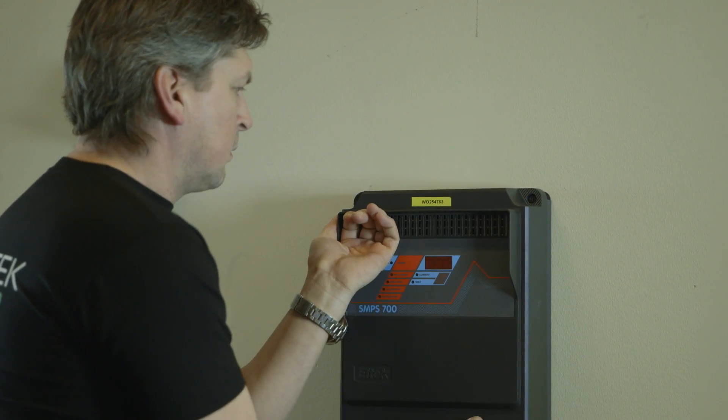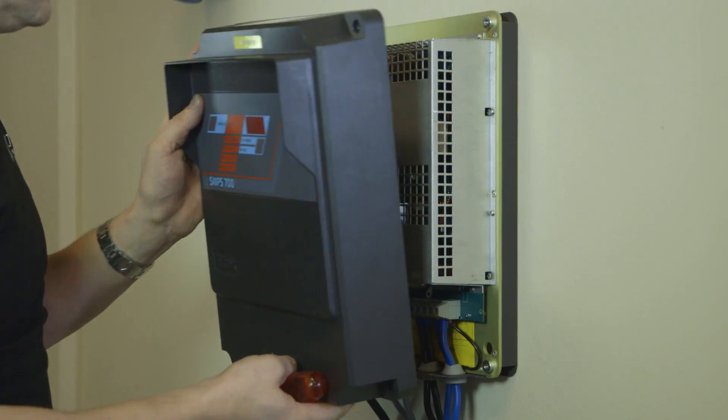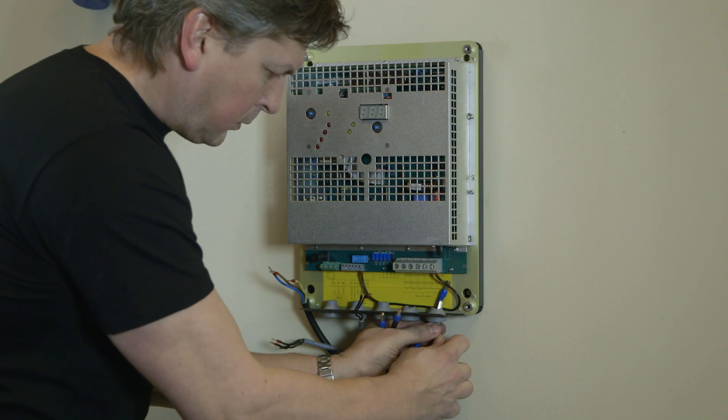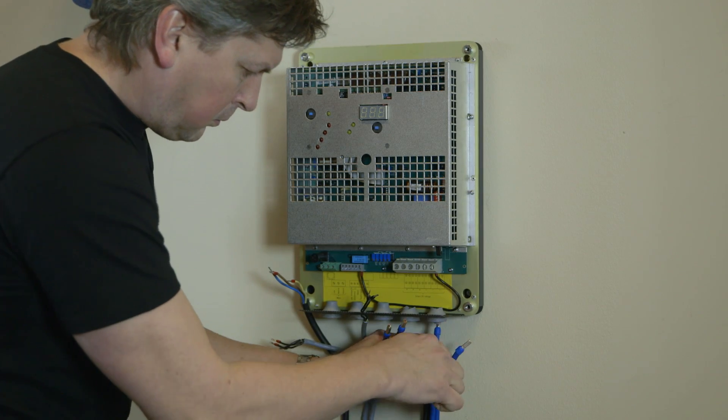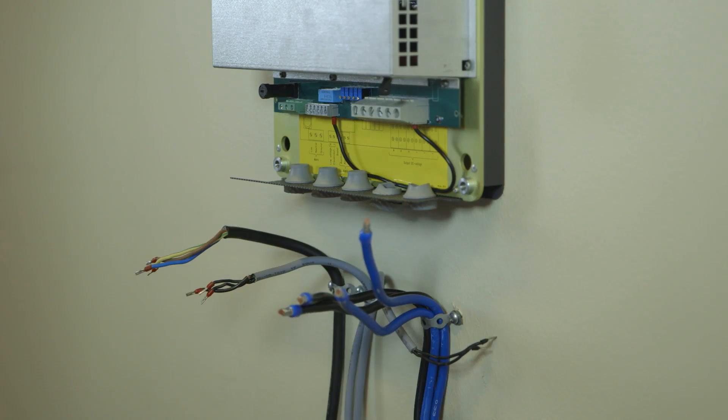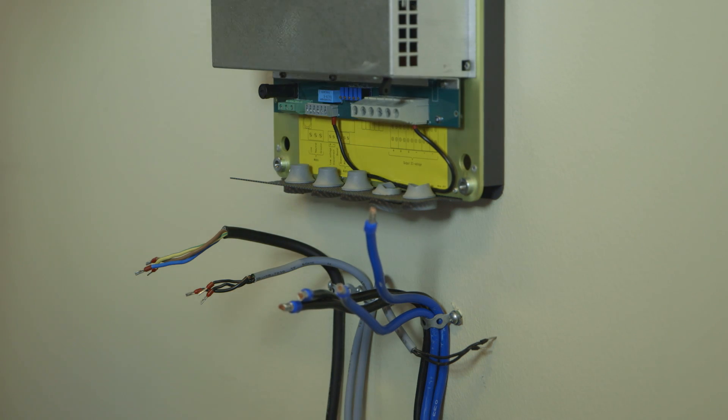Unscrew the four screws and remove the cover of the SMPS700. Loosen screws, disconnect and pull out all cables. Make sure you know which is which, make a note of it if necessary.